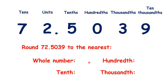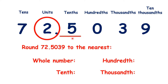For the nearest whole number, we find our units digit, and if we look along to the tenths, because we have five tenths, we need to round up. So that's 73 to the nearest whole number.